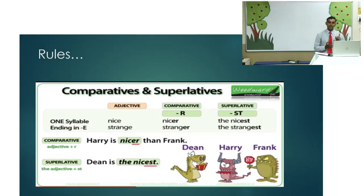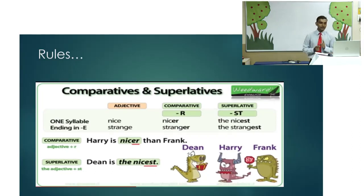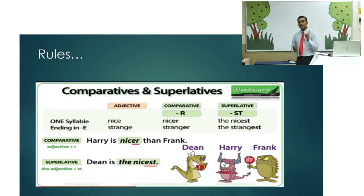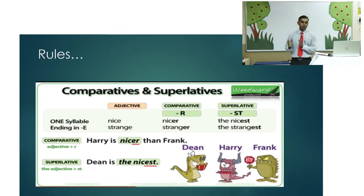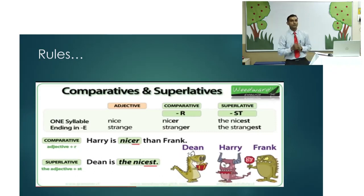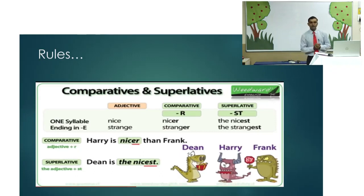So the third rule is: if you have a single-syllable adjective ending with the letter 'e', you do not add 'e-s-t' — you simply add 's-t' for the superlative and the letter 'r' for the comparative degree. Now let's take a look at some more rules.